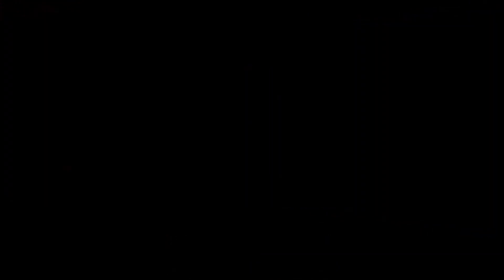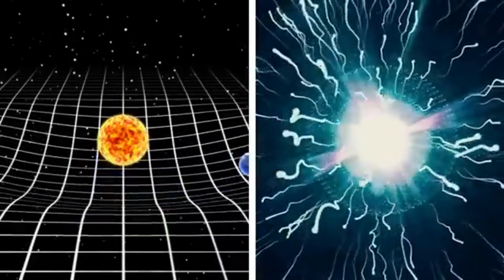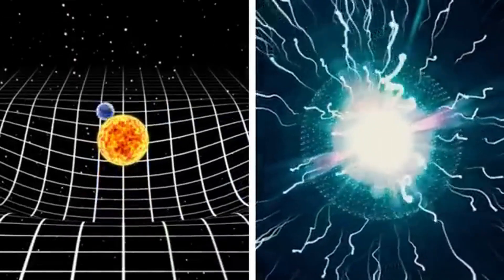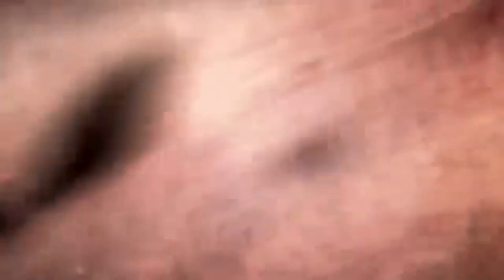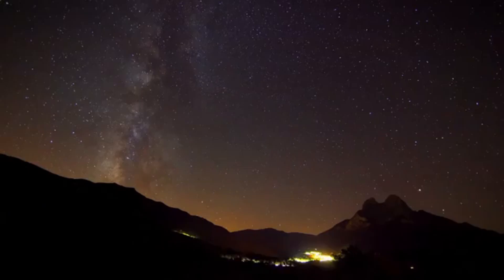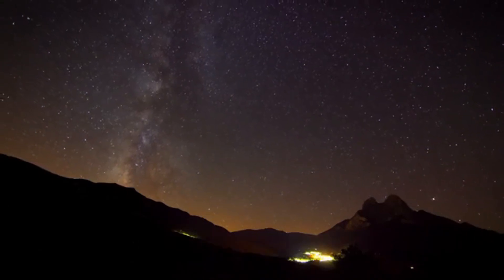These regions where Hot Big Bangs occur will expand away from all the other locations where inflation still goes on exponentially, meaning they will very quickly recede from one another's view. In the standard inflationary picture, because of this expansion rate change, there's virtually no chance that any two universes where separate Hot Big Bangs occur will ever collide or interact.